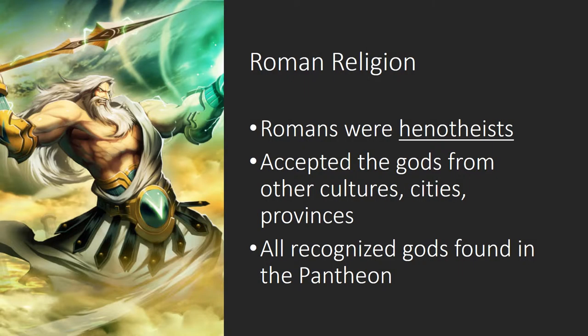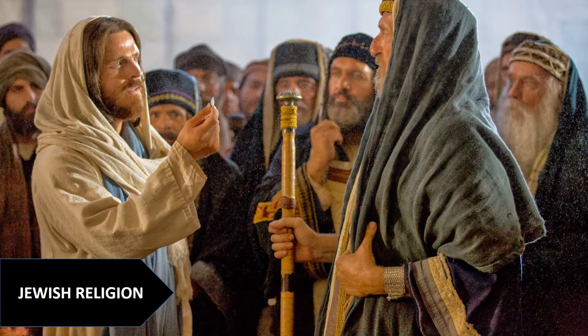When the Romans conquered a city or territory, they simply absorbed their deities into the Roman pantheon. Romans were henotheists, meaning they believed all people worshipped the same gods but used different names to describe them. Thus, Zeus to the Greeks was Jupiter for the Romans. Poseidon was the god of the sea for the Greeks, while it was Neptune for the Romans. But the Pantheon did have one deity Romans considered extremely strange, and that was the god of the Jews — Jehovah.